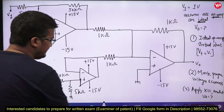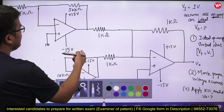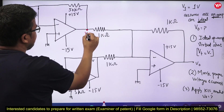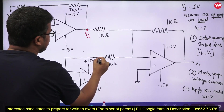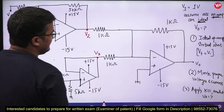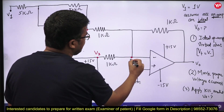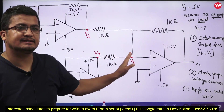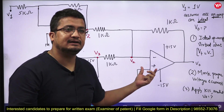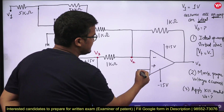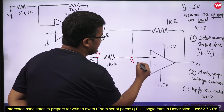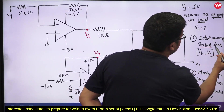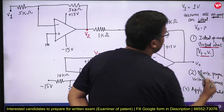Looking at this first configuration, let us say this voltage is V2, this voltage is V3, and this voltage is some Vx. In the first case, it is an ideal operational amplifier and negative feedback is there, which means they are basically having the virtual ground condition. You can see this node is at 0V. If this is at 0V, then this is also going to be at 0V, because of virtual short condition the potential at the inverting terminal equals the potential at the non-inverting terminal.